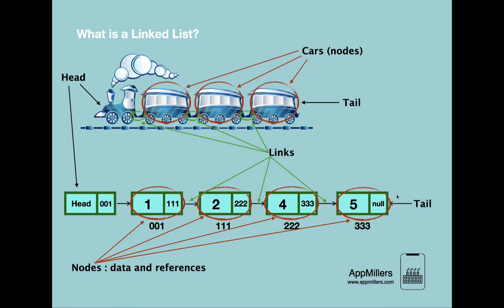The last component in the linked list is tail, which is a reference to the last node — we store the physical location of the last node. You might wonder why we need tail. If you want to insert an element at the end of the linked list without tail, you would need to traverse through all elements to reach the last node, which is very time-consuming and has O(n) time complexity. By knowing the last element's address via tail, we can greatly increase the efficiency of inserting at the end.